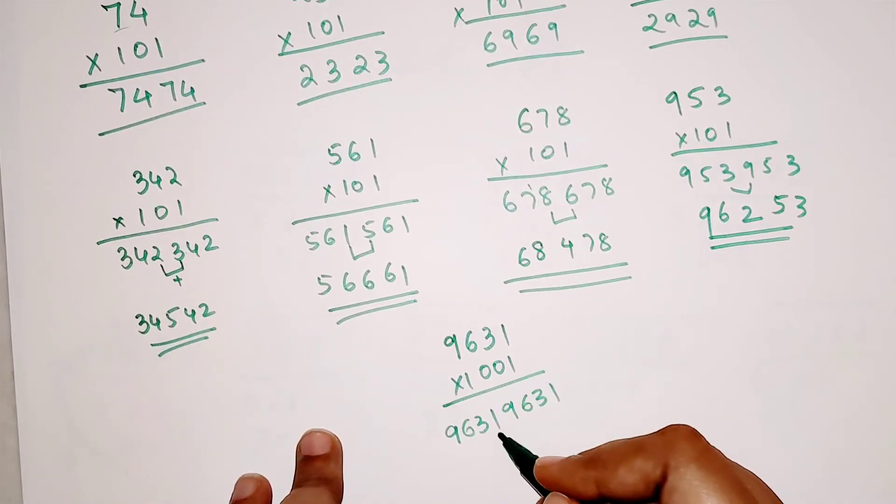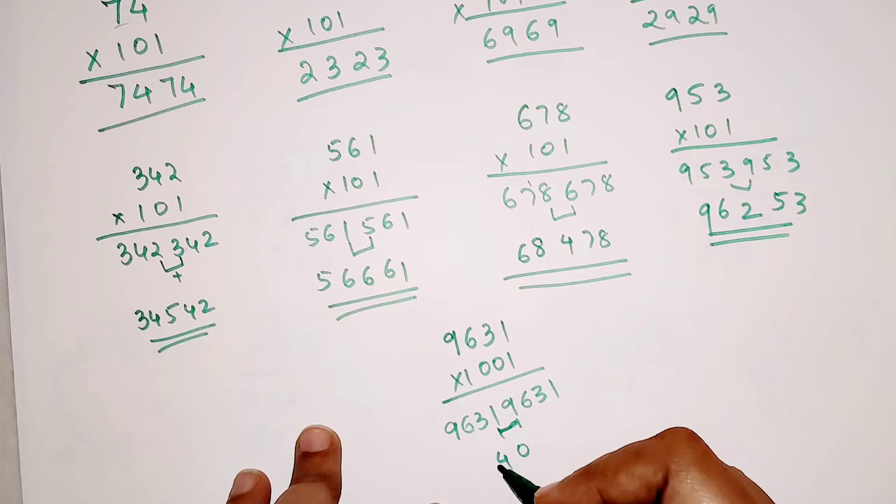We are adding these 2. We get 0 and 1 gets carried over here. So 3 plus 1 gets you 4. 6 is as it is written. 9 is as it is written.